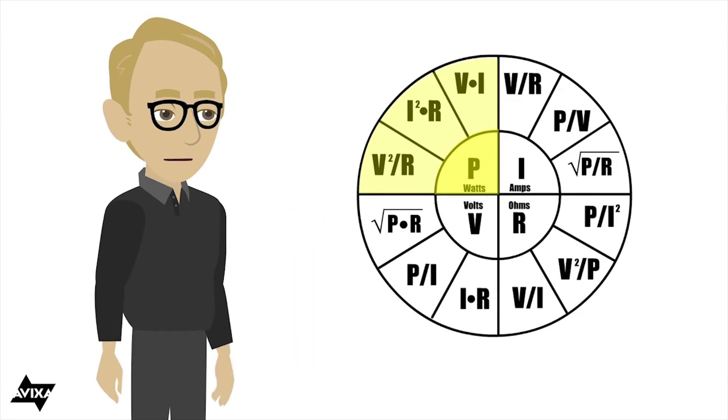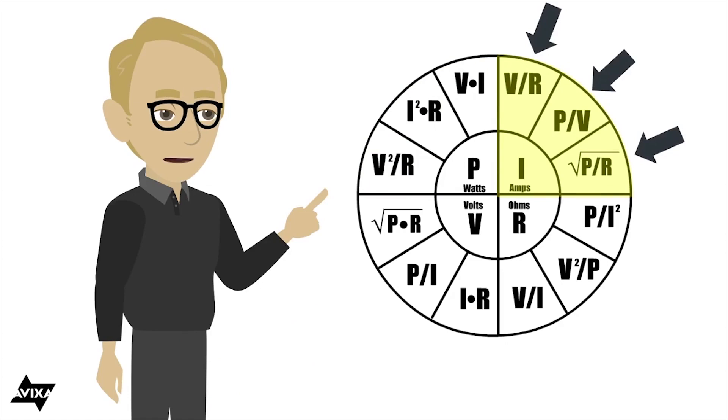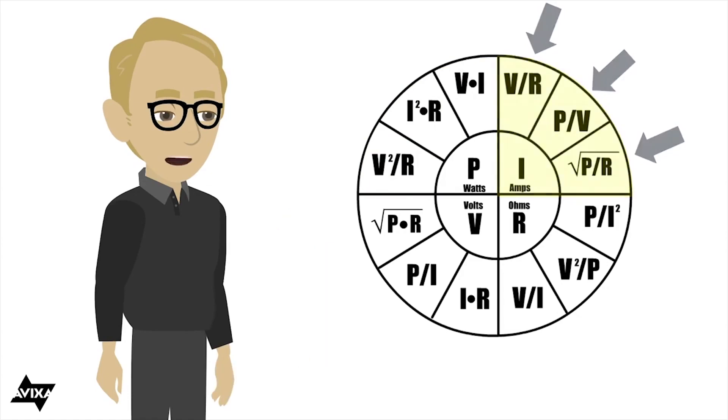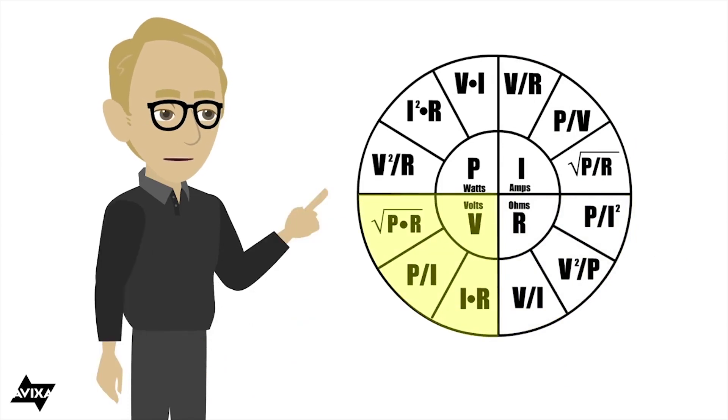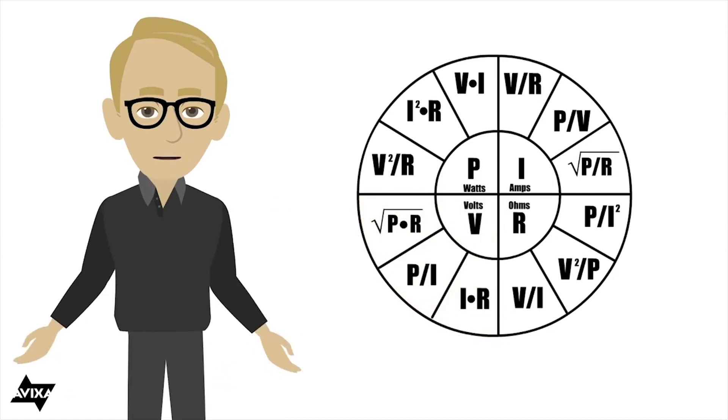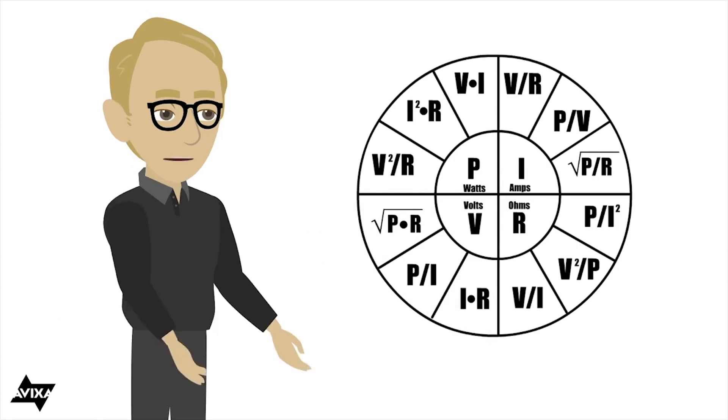So that's the upper left quadrant for power. If I want to solve for current, I'm going to take the upper right quadrant, and here are my formulas for solving for current. If I want to know what the resistance is in the circuit, I'll take the lower right quadrant here, and I'll look at those formulas. If I want to solve for voltage, I'll look at the lower left quadrant, and I can take a look at the values there. Now, are you going to need to memorize the entire formula wheel in your day-to-day work or for the CTS exam? No.